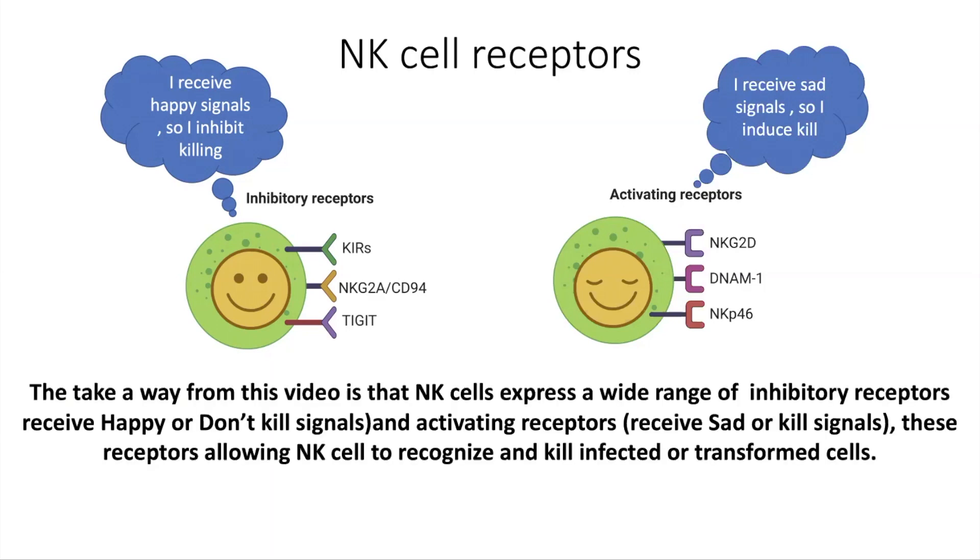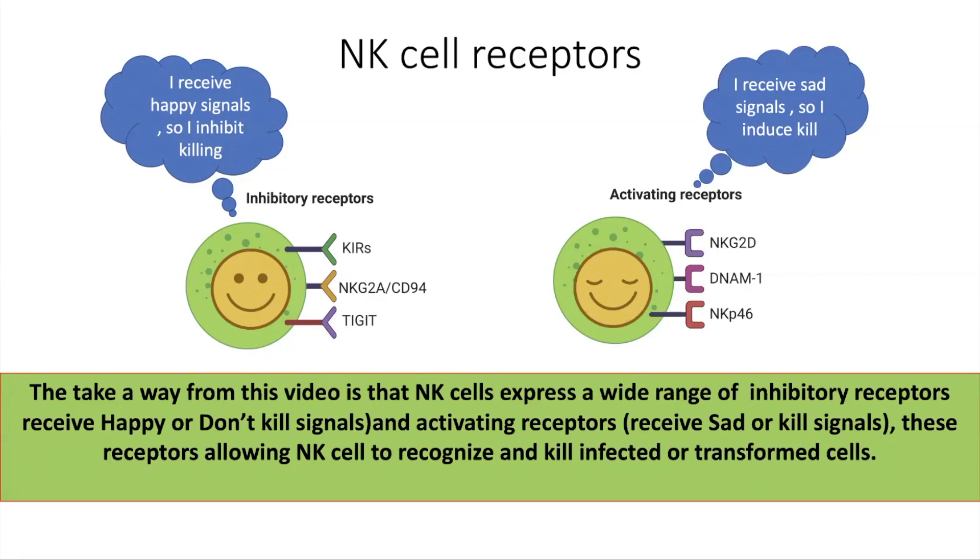which receive the happy signal or don't kill signal and activating receptors which receive the sad signal or kill signal. These receptors allow the NK-cells to identify and kill the infected or damaged cells.